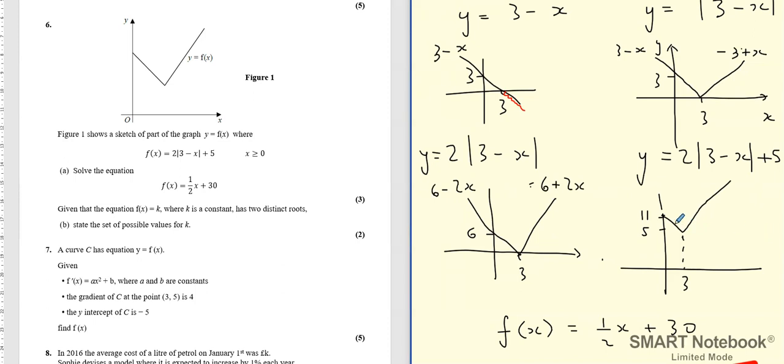So when I shift it up by 5 this part of the line, the downward sloping part of the line is going to become 11 minus 2x, and this part is going to become minus 1 plus 2x.